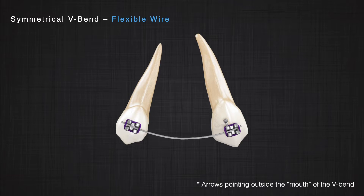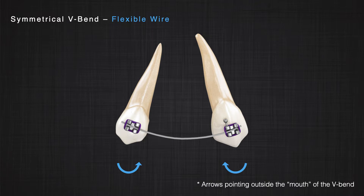In that case, the bend the wire adopts acts as a central V-bend. The key difference is that the flexible wire wants to flatten itself back to its original position, so the direction of the moments is opposite to what we see in the rigid wire. In rigid wires, the moment goes inside the mouth of the V-bend; with flexible wires, the moments go outside the mouth of the V-bend.